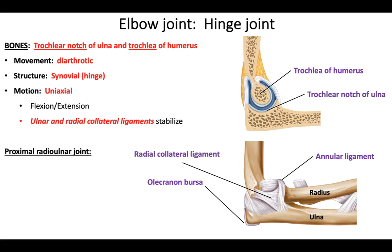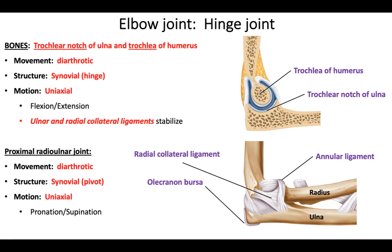There's also the proximal radio-ulnar joint, which is a pivot joint. A pivot joint has a ring, and what forms the ring here is the annular ligament. This ring wraps around the radius, and the radius can rotate inside the annular ligament. That joint allows pronation and supination. There's also an olecranon bursa — a thin cushion between the skin covering your elbow and the olecranon — which protects the skin when you bump your elbow.